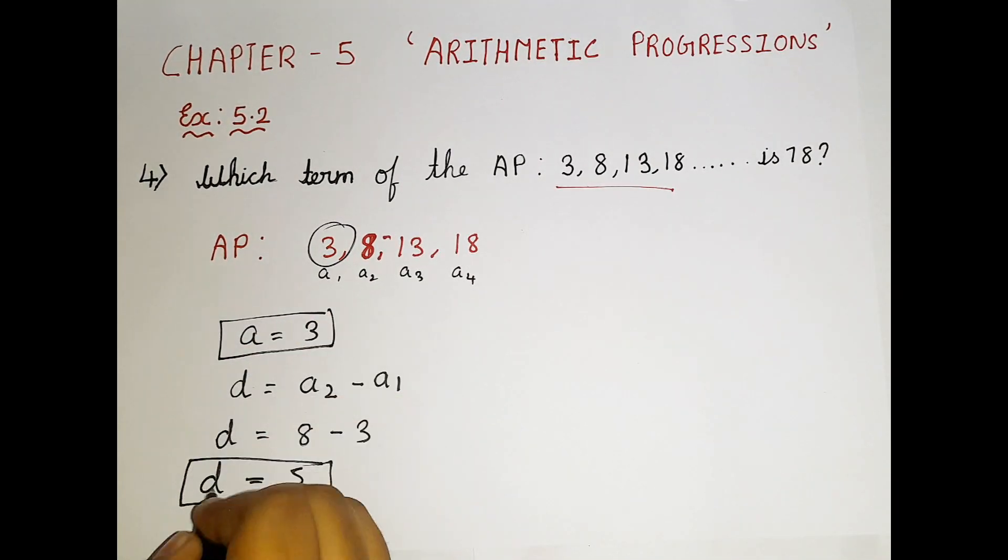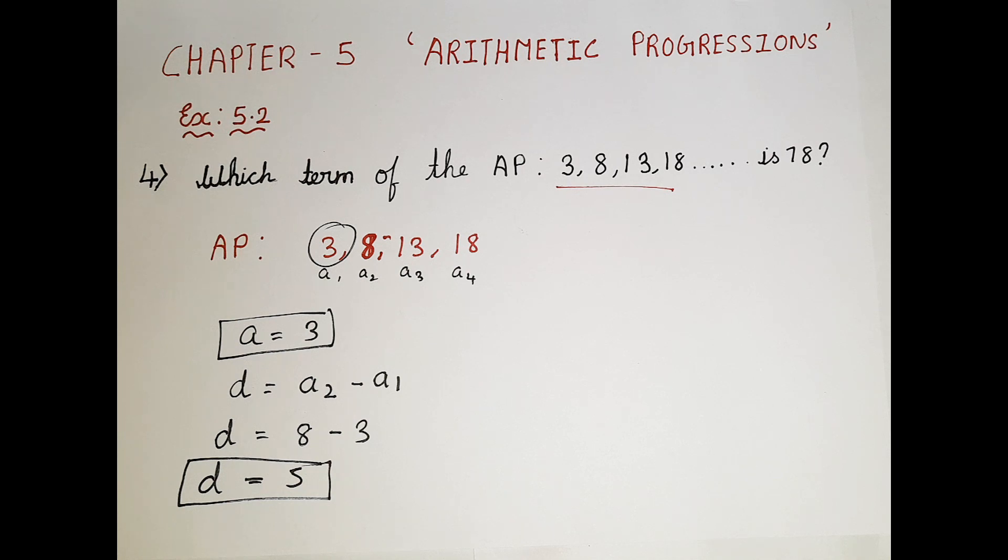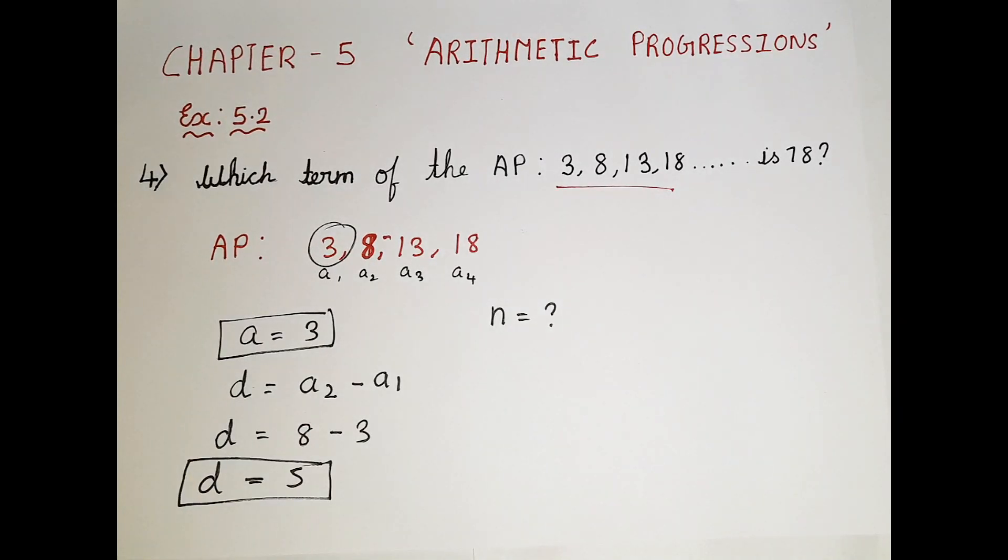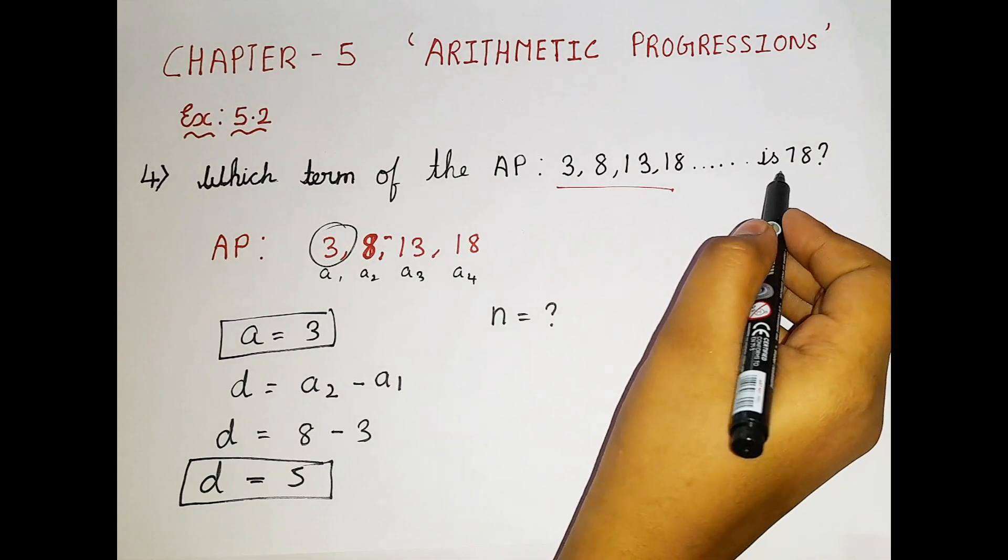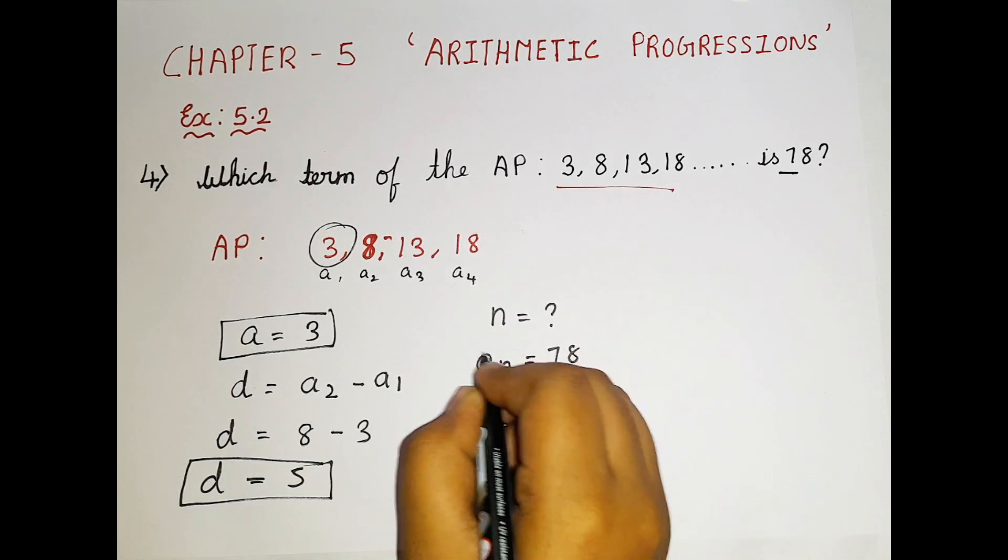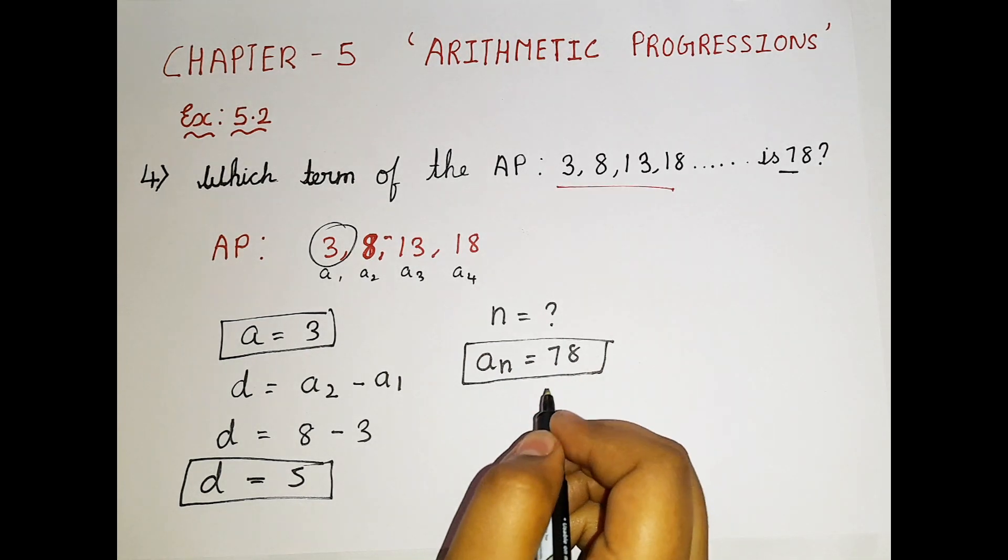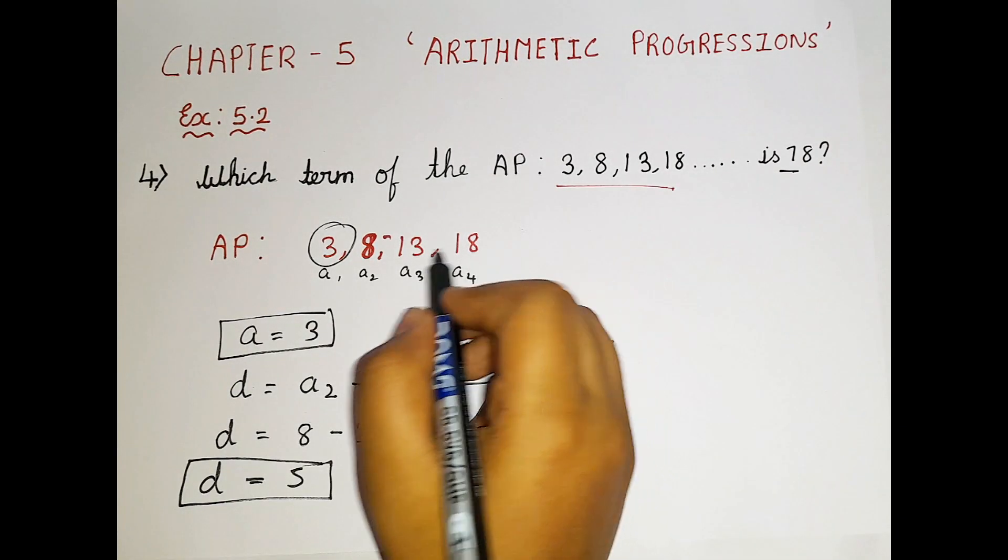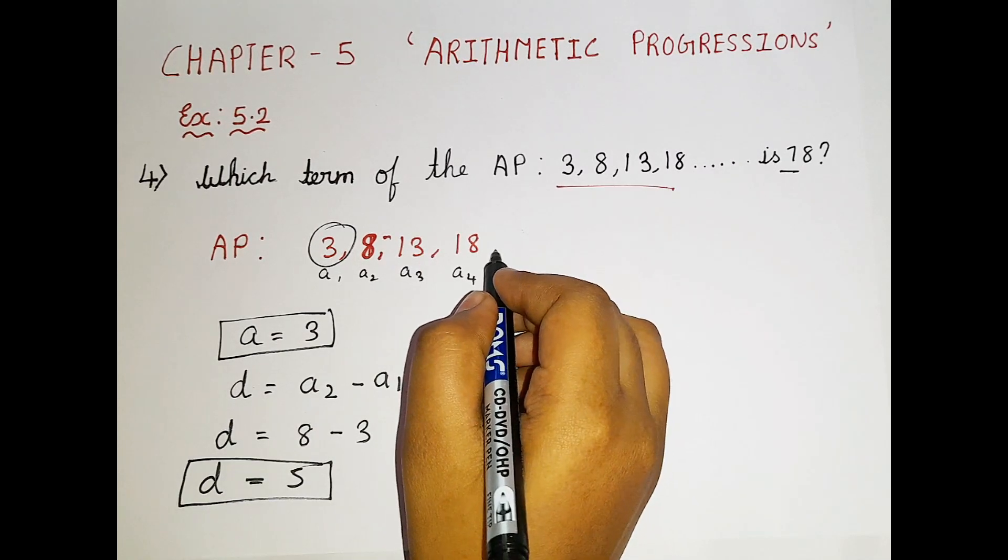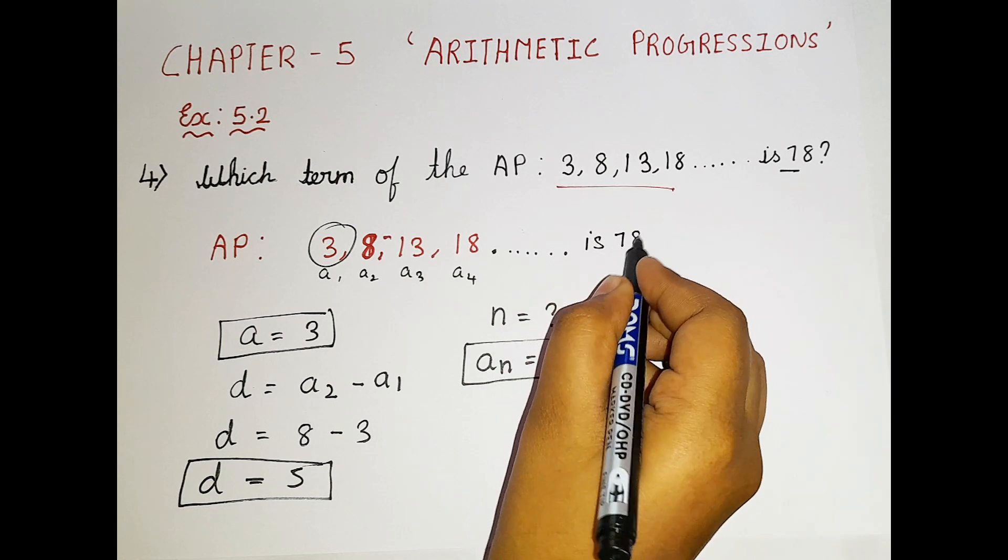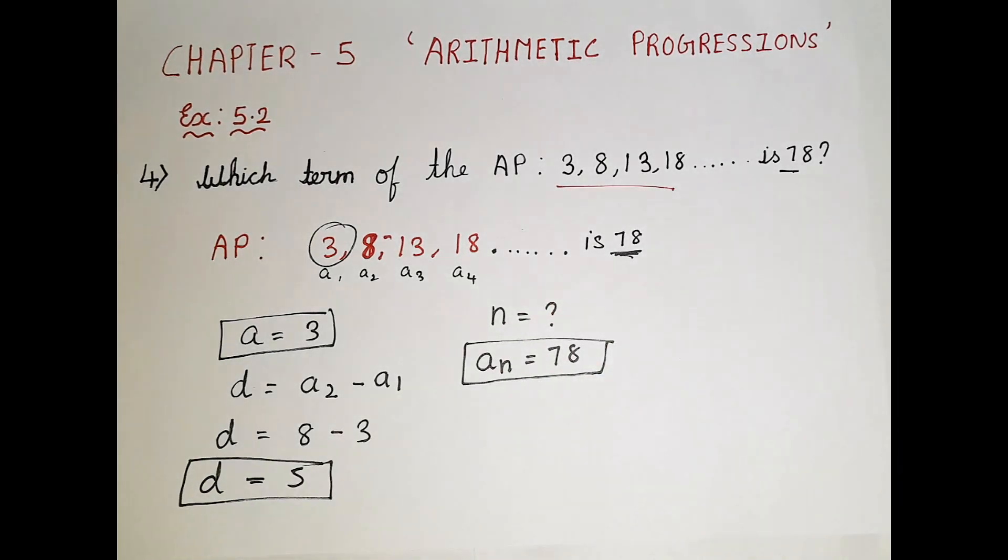Now we know the a value and the d value. Now let us apply the formula. We don't know the n value. In the question they didn't mention the n value. What is 78? The 78 is an value. You guys might be wondering how can I say 78 is an value? This is arithmetic progression. Whenever we have a point like this and then is 78, we are supposed to take that 78 as an.